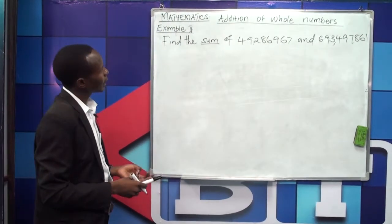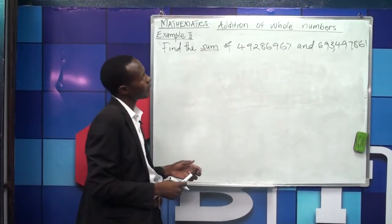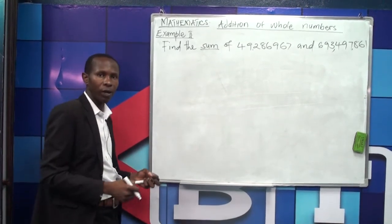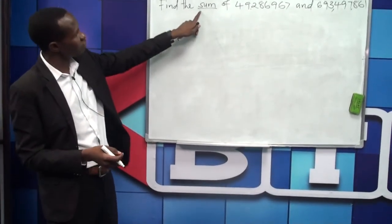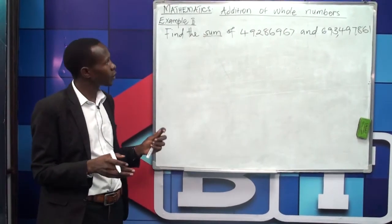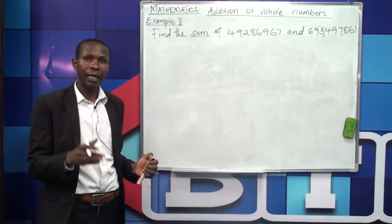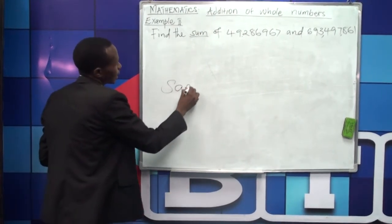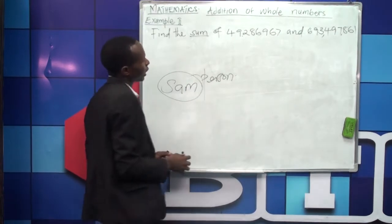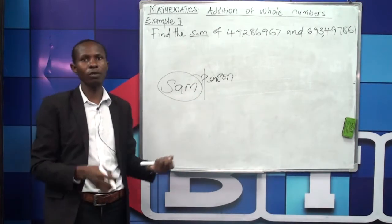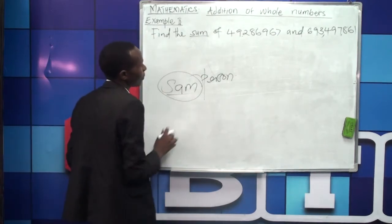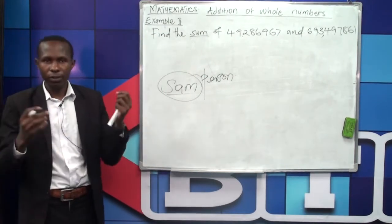After knowing that 'sum' means addition, the next step is to copy the first number down, then write the second number underneath, and add. We are going to add because of the word 'sum.' Remember, the word 'sum' represents addition.